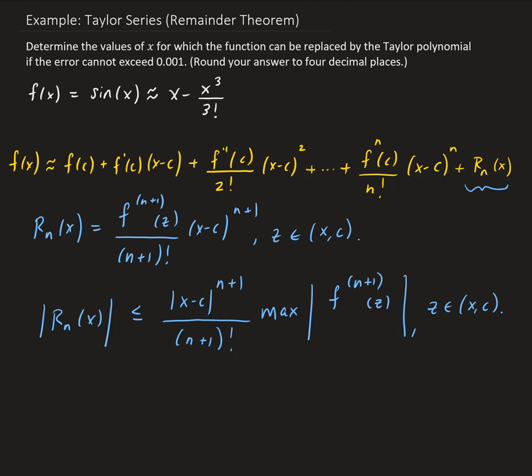If we take the maximum of the (n+1)th derivative, then the residual must be smaller than that. This works well with functions such as sine and cosine because we know the maximum for those function values is going to be 1. For sine x, the (n+1)th derivatives alternate between sine and cosine with plus or minus signs, but taking the absolute value means the maximum is always going to be 1.